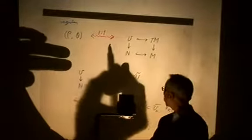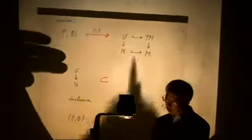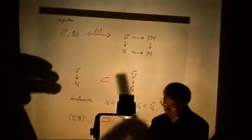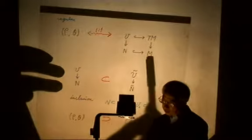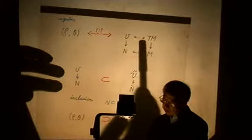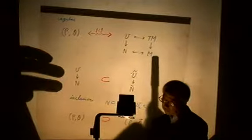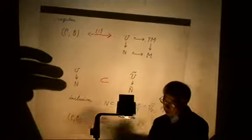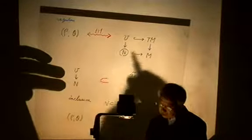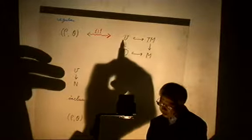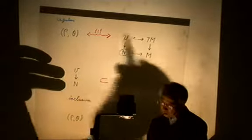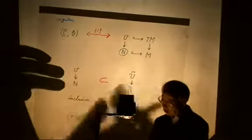Regular ideals are in one-to-one correspondence to a vector bundle over a submanifold N of M, where N is the common zero set of the rho's, and V is the set of vectors annihilated by theta, satisfying a commutative diagram condition.